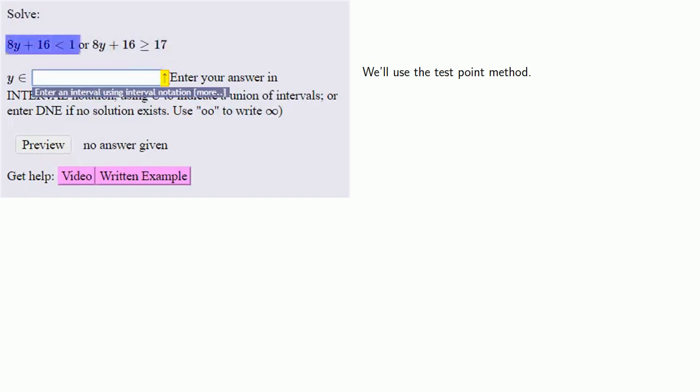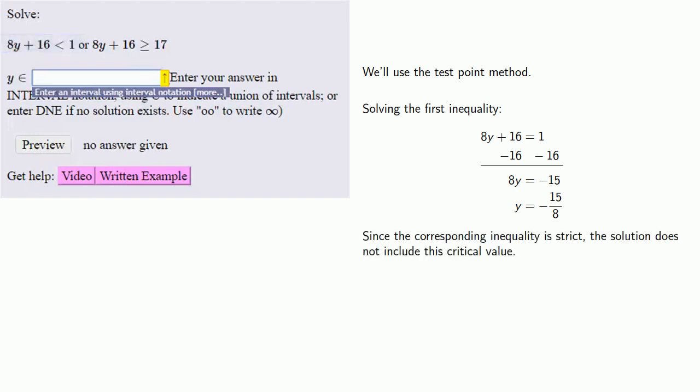We'll take our first inequality and ignore the inequality, pretending it's an equality and solve the equation 8y plus 16 equals 1. Like a good math student, we have to acknowledge the existence of the inequality. Since the corresponding inequality is strict, the solution does not include this critical value. So our inequality has critical value y equals negative 15 eighths, which is not included.